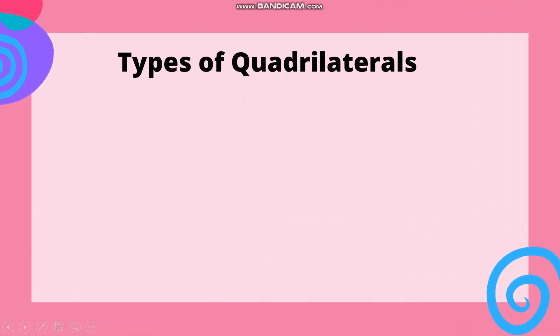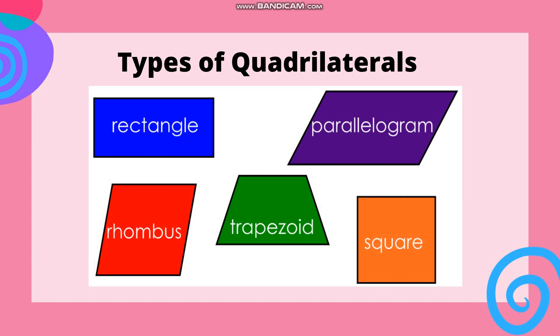Types of quadrilaterals: We have rectangle, parallelogram, rhombus, trapezoid, and square.